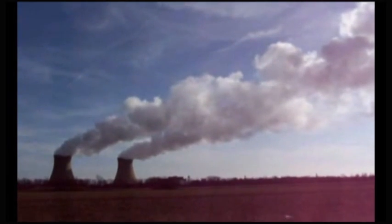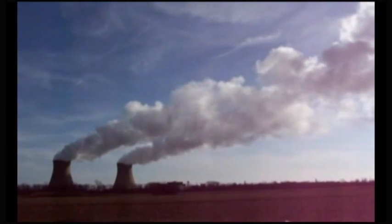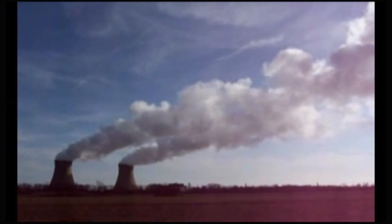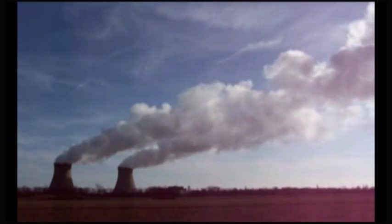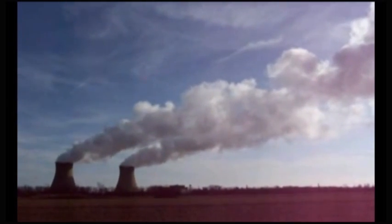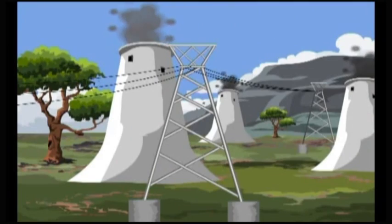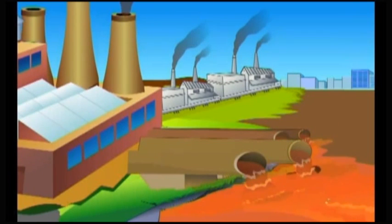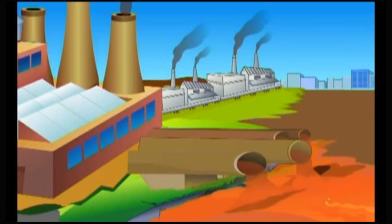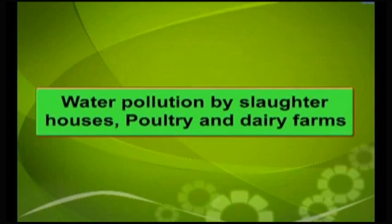Thermal pollution occurs near thermal and nuclear power plants. Thermal pollution can be reduced by cooling the water in cooling towers before it is released into water bodies. Now let us see water pollution by slaughterhouses, poultry and dairy farms.